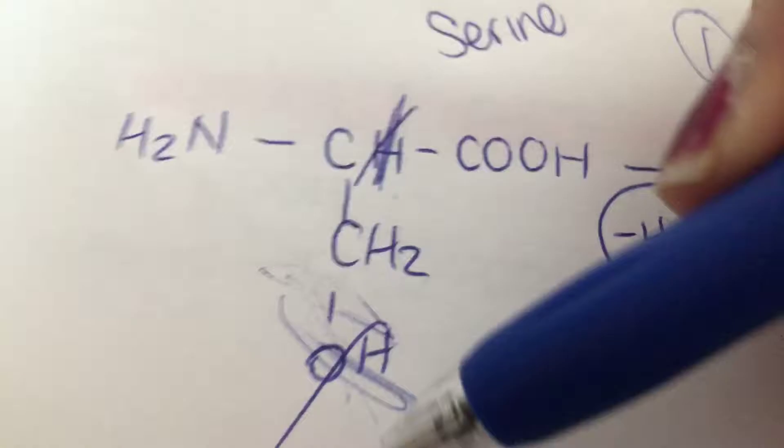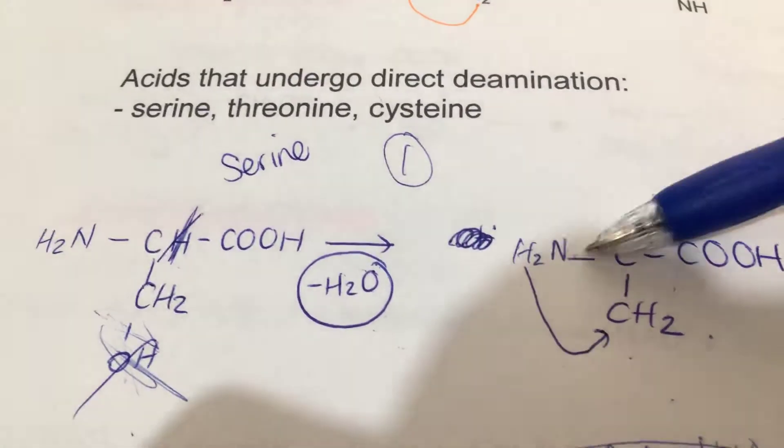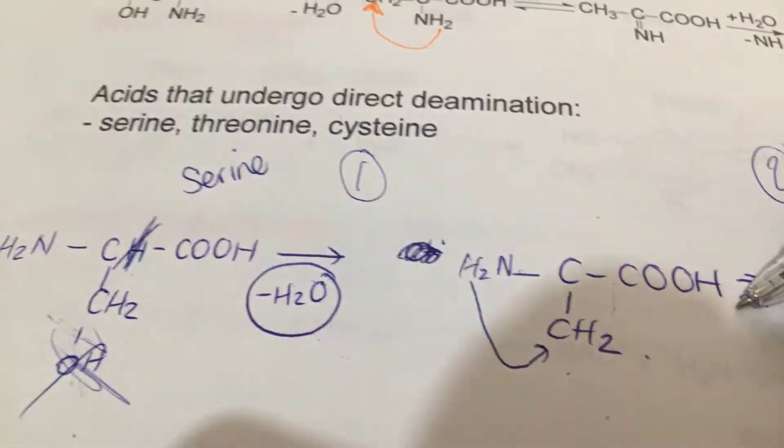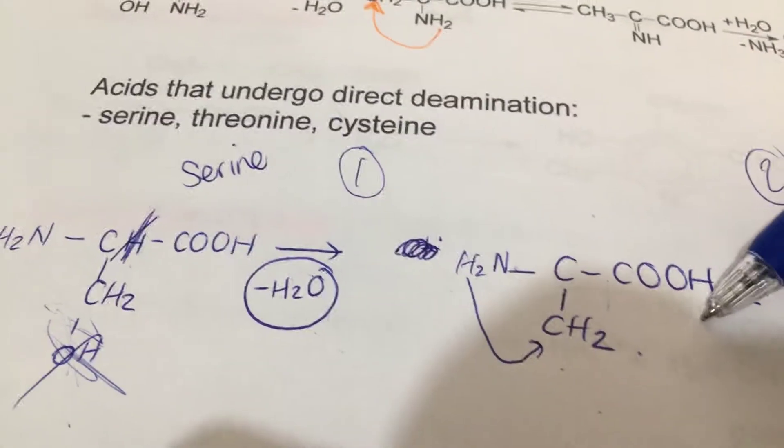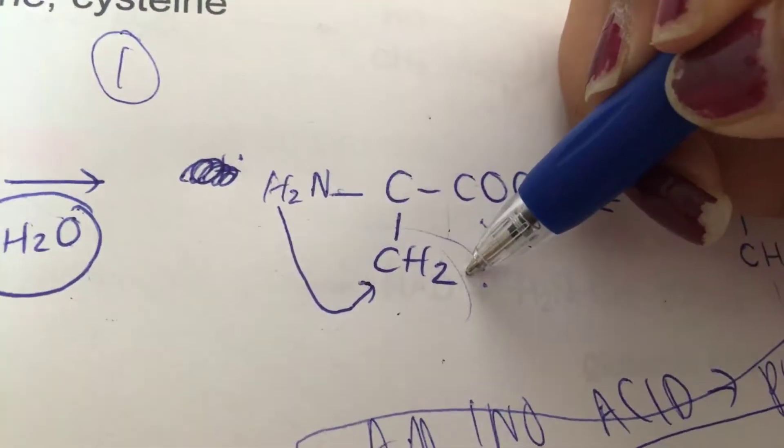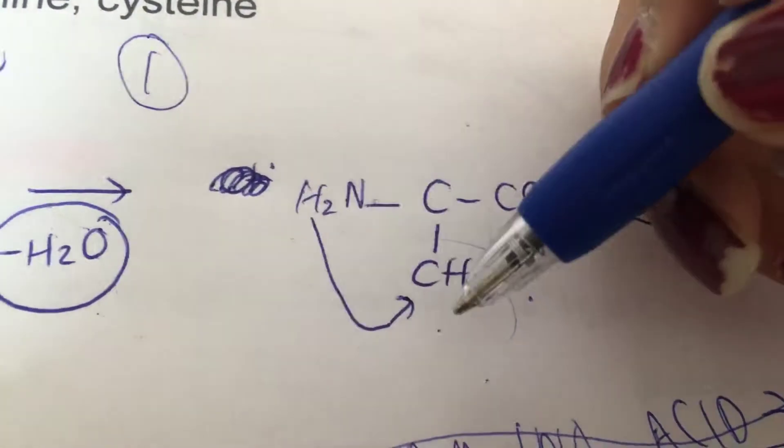Then you're going to be left with H2N-C-CH2-COOH. Why? Because the hydrogen from there is gone, the OH from there is gone. Now the only thing that's missing here is literally the hydrogen that was here and the OH is missing.